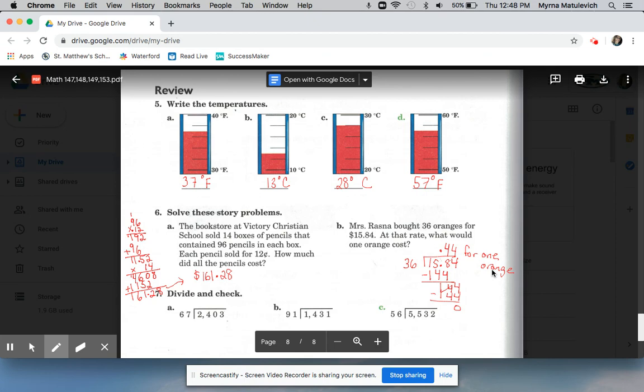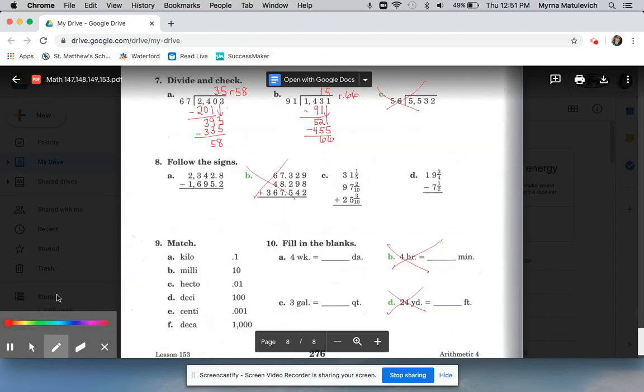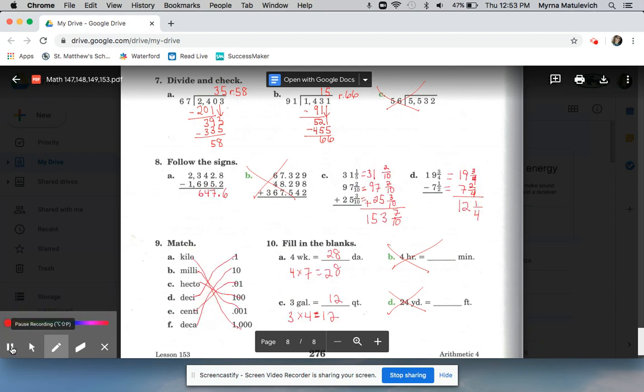Divide and check, and this is what you should have gotten. I crossed off all the greens. Follow the signs, matching and fill in the blanks. Okay, so this is what you should have gotten.